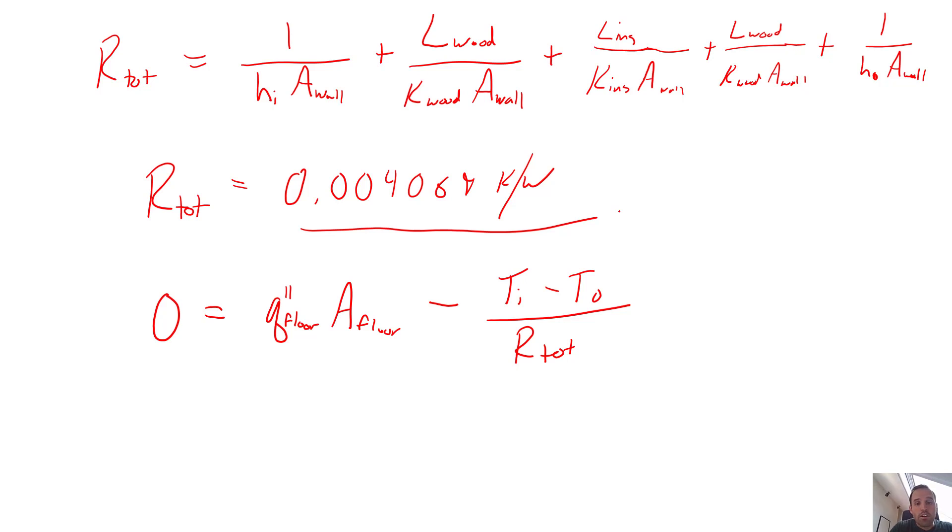So we want to know how powerful of floor heaters do we need. So we get that Q_floor is equal to T_i minus T_o divided by our total and then we would also pick up this A_floor in the denominator.